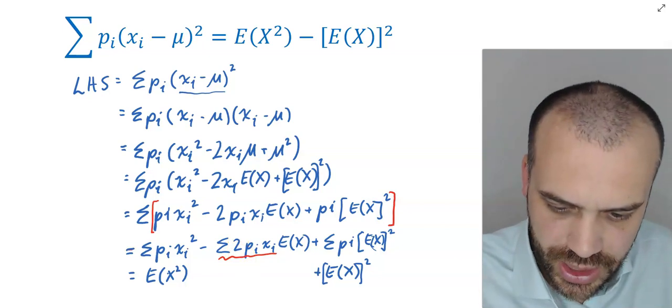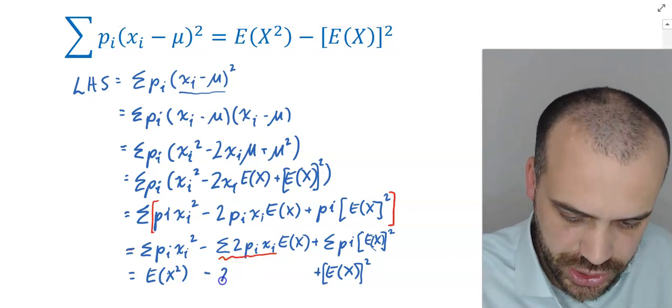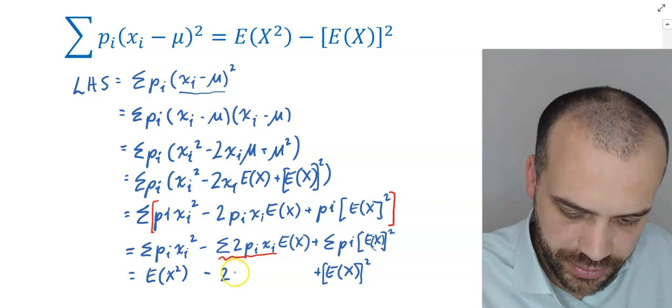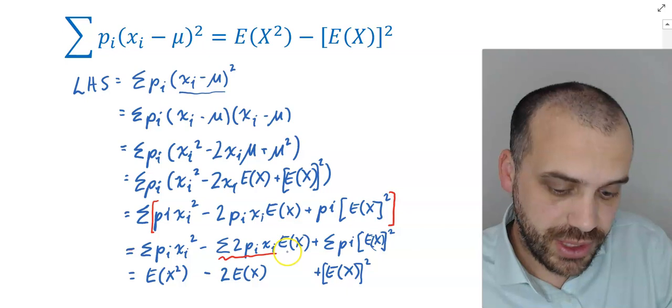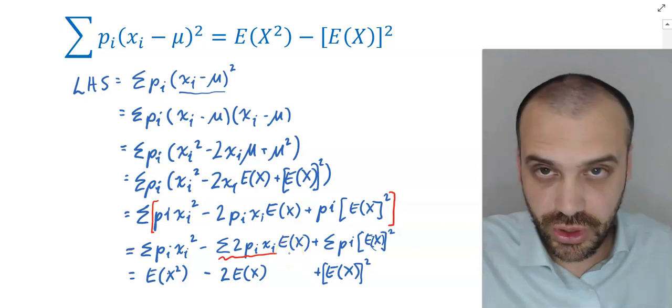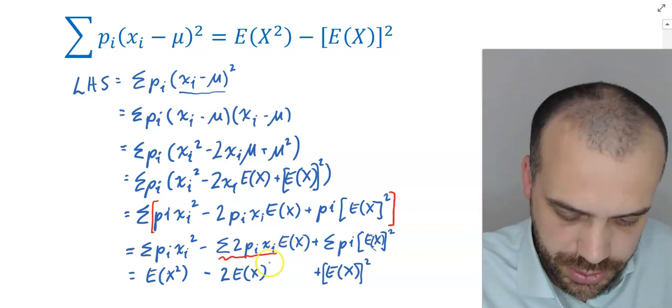So this thing here is two expected values. So what we now have with this middle section is minus 2 expected value, but then there's another expected value there. So expected value times expected value, which is expected value squared.